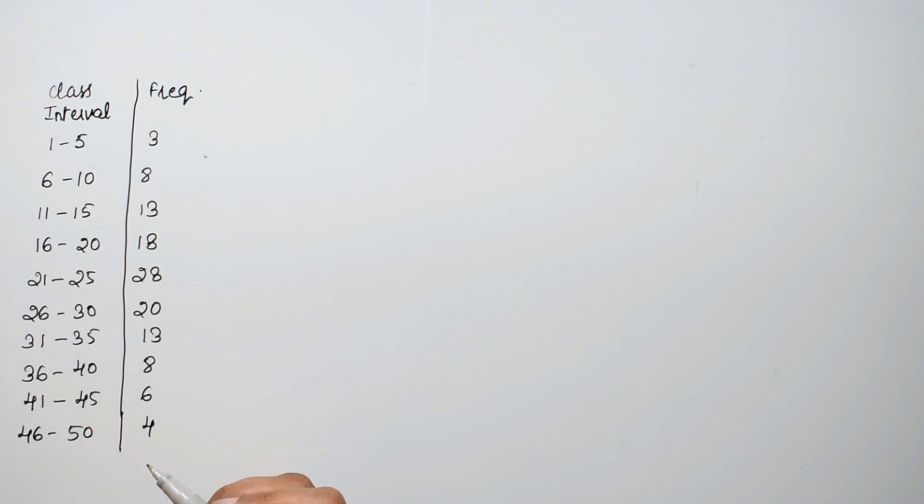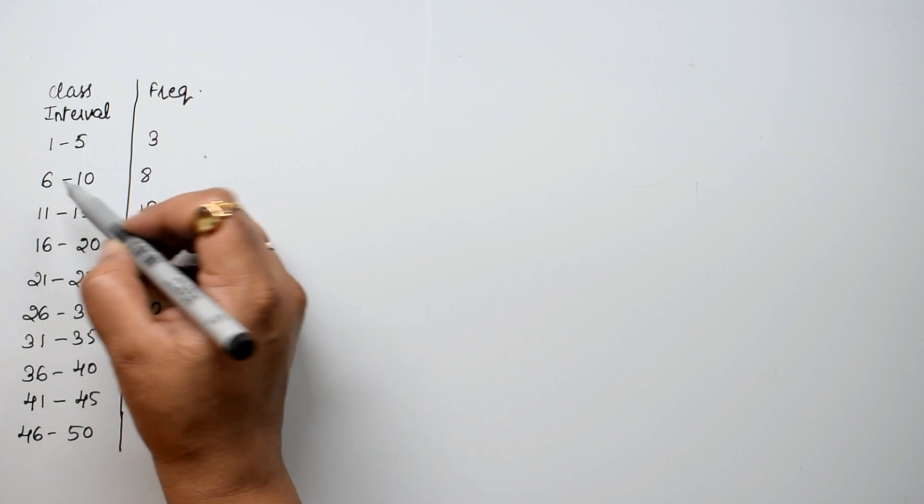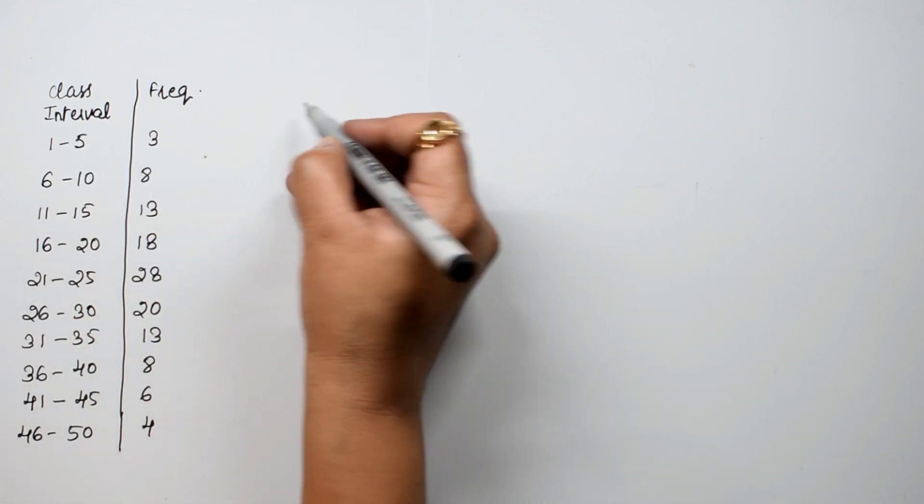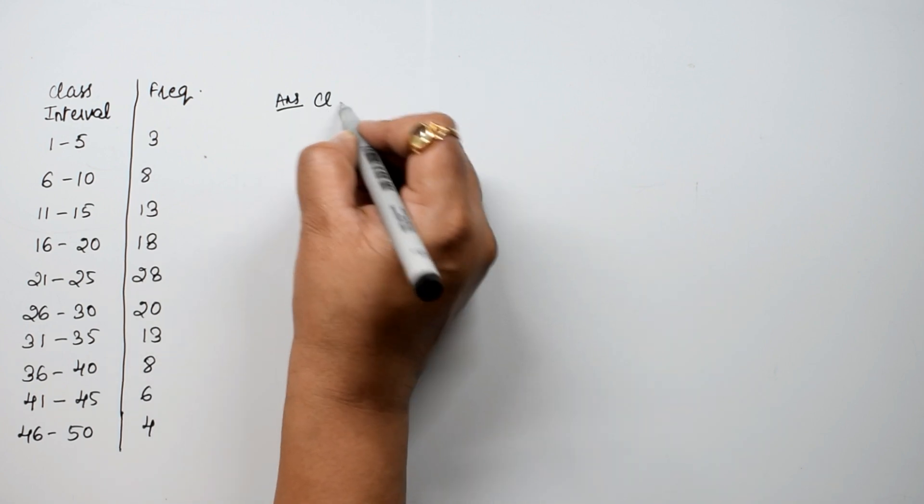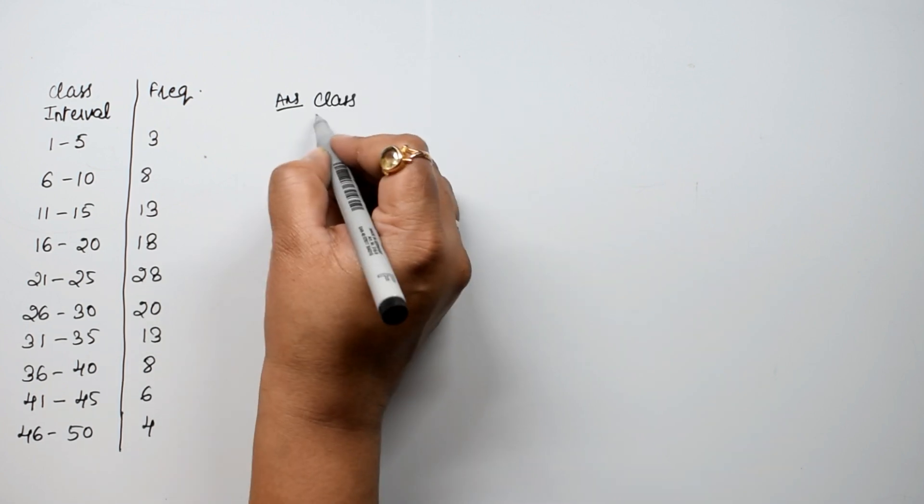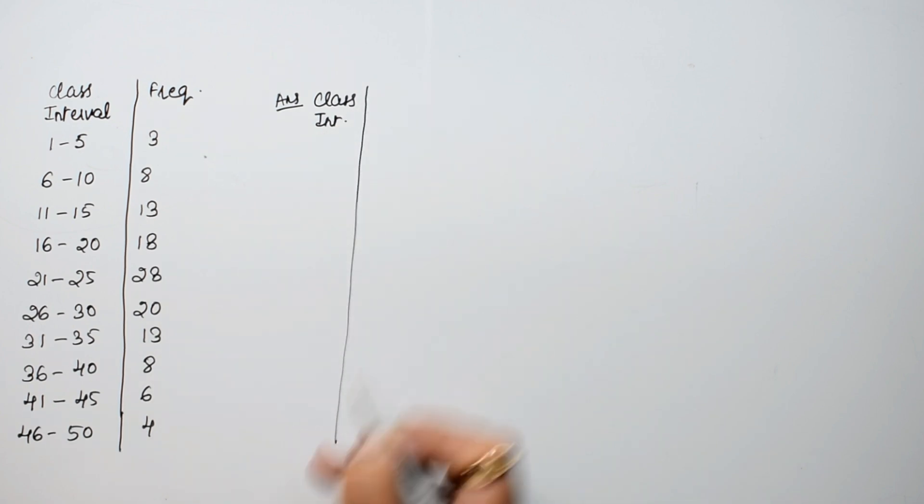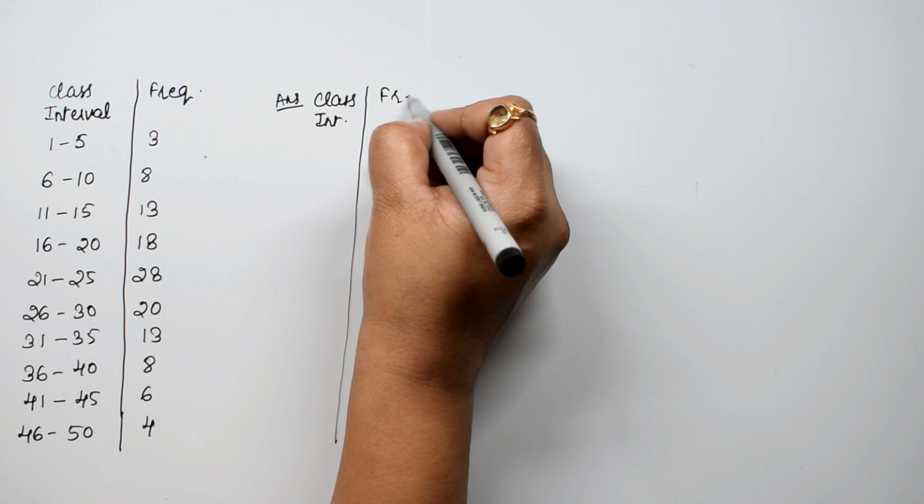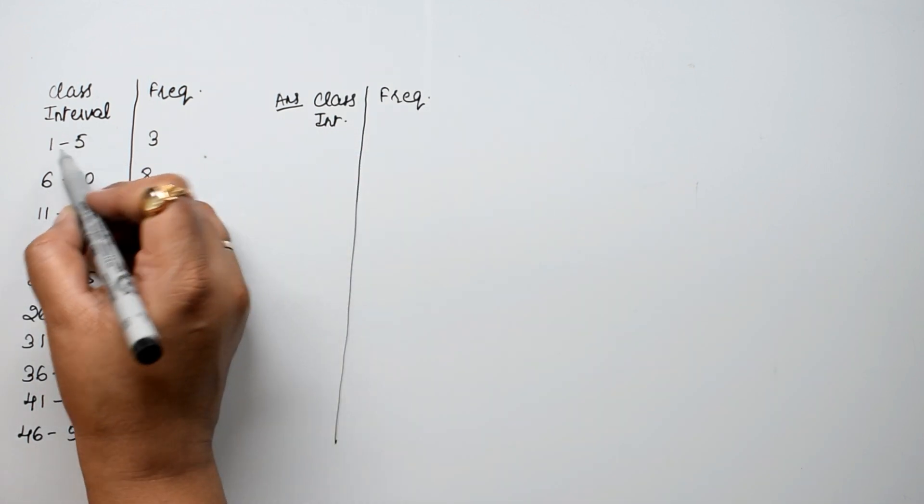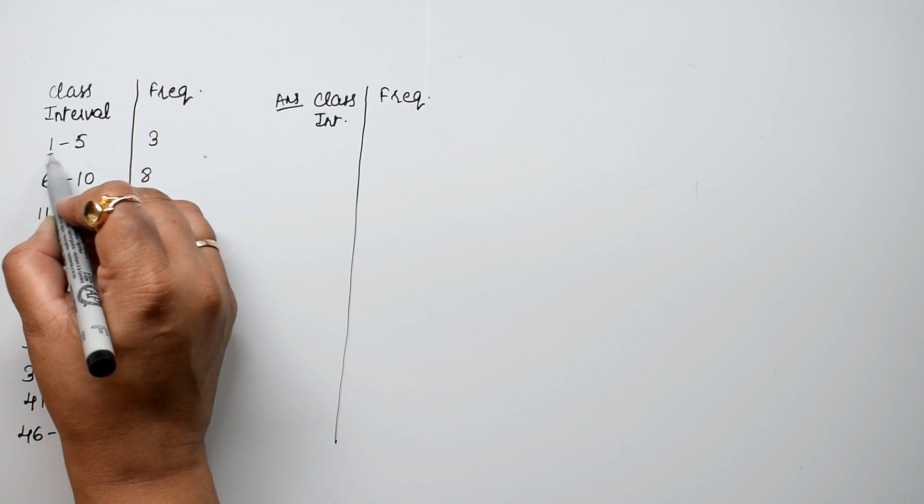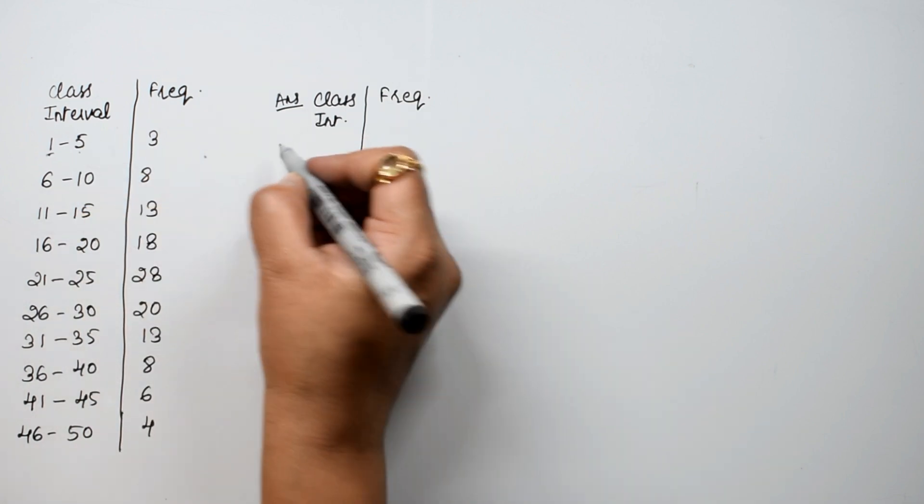Now you will note one thing. We have to find the mode and note that our upper limit and lower limit are not continuous. So we have to calculate the actual class intervals by taking the lower limit and adding to the upper limit.